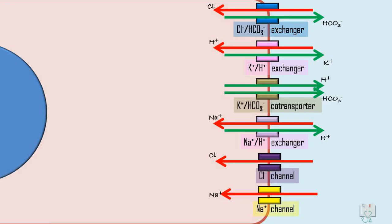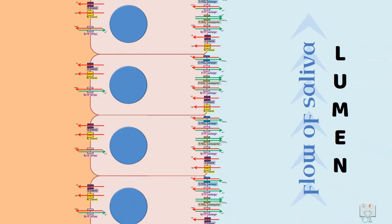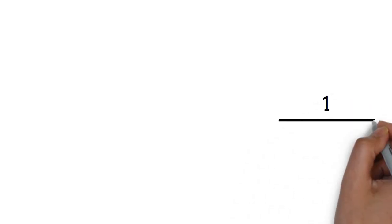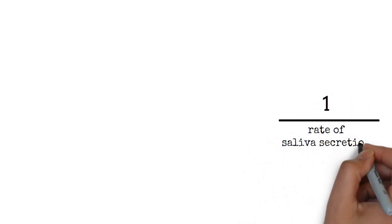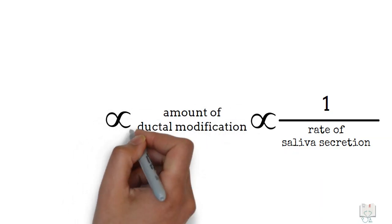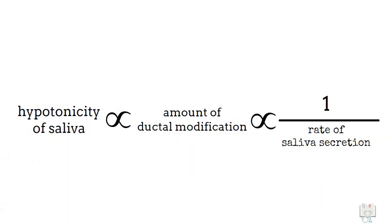These ductal modifications depend on the rate of saliva secretion. The slower the saliva secretion, the more time there is for ductal modification, and the more hypotonic the final saliva.